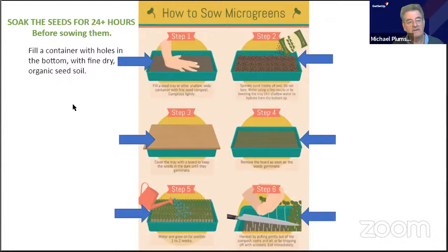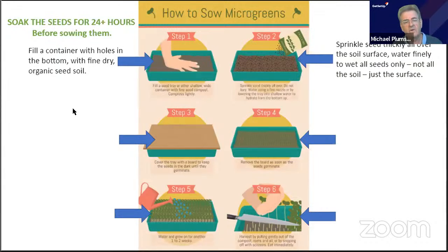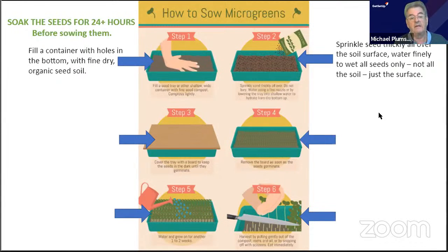Fill the container — make holes in the bottom if there aren't any. Fill with dry organic soil, then pat it down smoothly and firmly. Use a piece of wood the size of your container, or just your hand. Get the hills and mountains out of it. Then sprinkle your seed thickly all over the soil surface — not seeds on top of seeds, but right up against each other. You can sprinkle more thinly if you want.